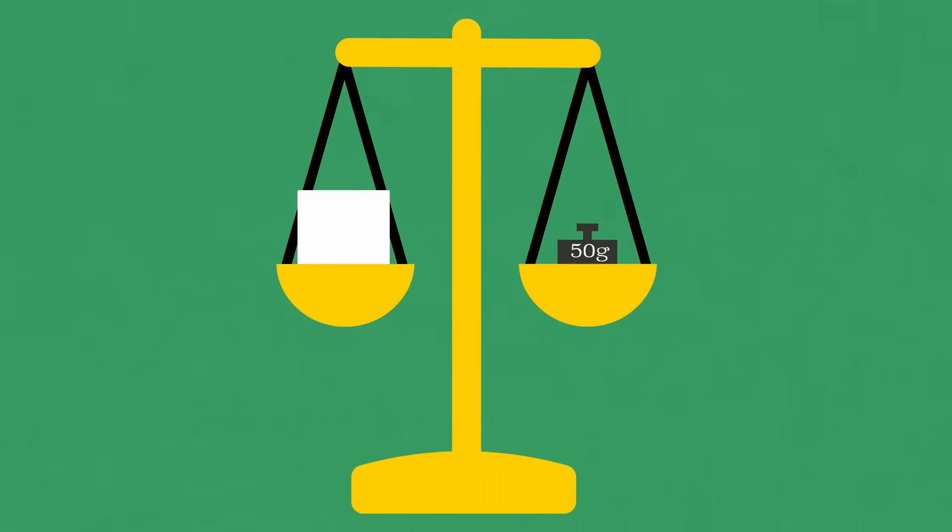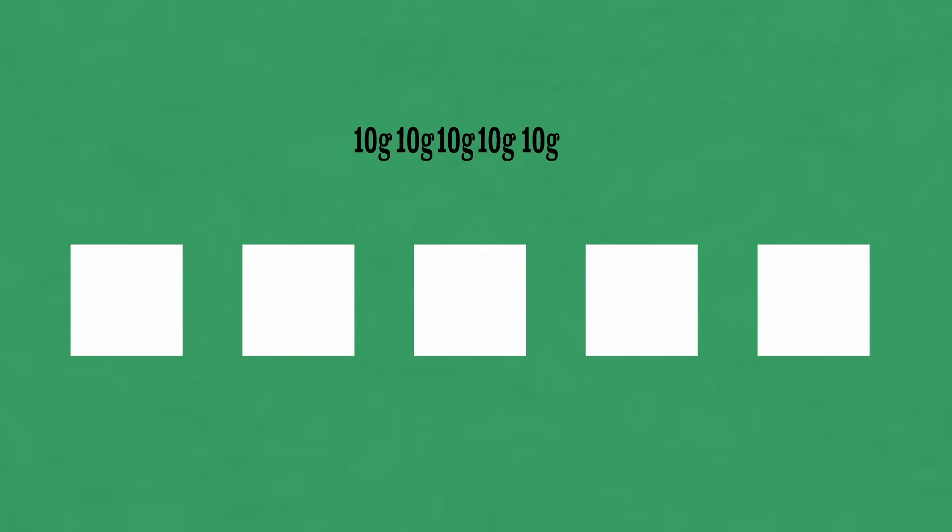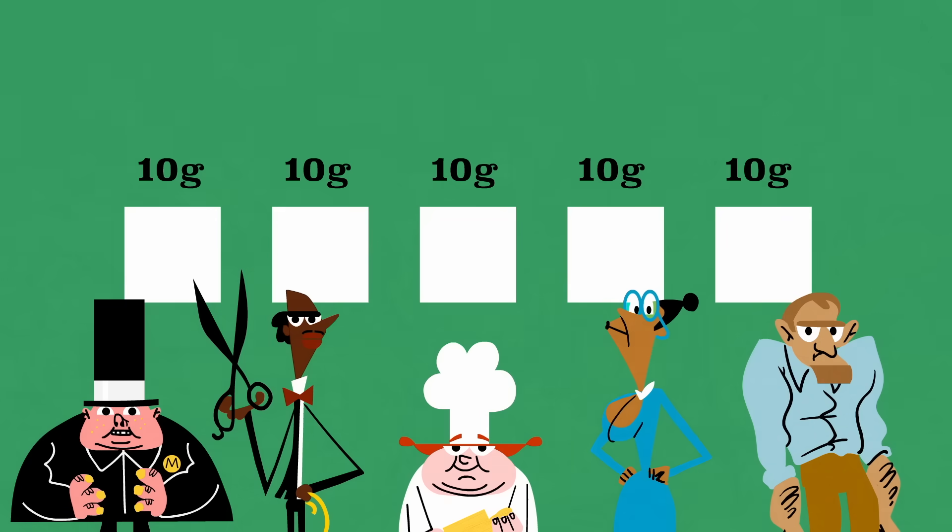Luckily, the remaining square is 50 grams, and the minimum effective dose is 10 grams. If you can precisely divide the square into fifths, you'll have just enough antidote for everyone.